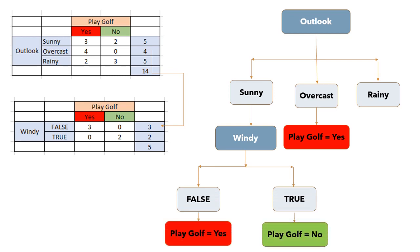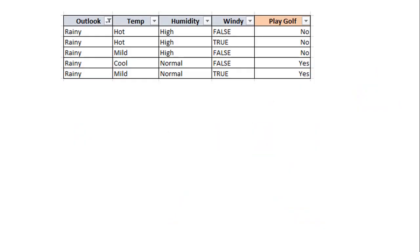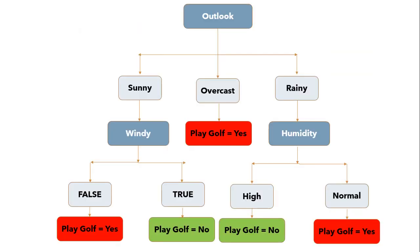We repeat the same for the rainy branch. Here's a useful trick: looking at the rainy table, humidity has high and normal values where high has 3 no and 0 yes, and normal has 2 yes and 0 no. Entropy for this column will be 0, while other columns have mixed data. So information gain for humidity will be the highest. We can split on humidity just by inspection, with high → no and normal → yes as leaf nodes.